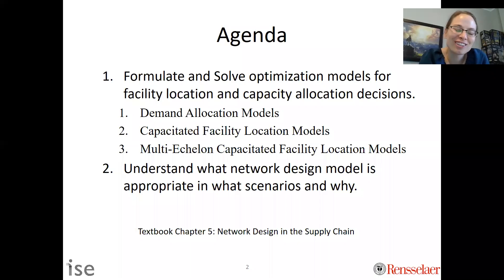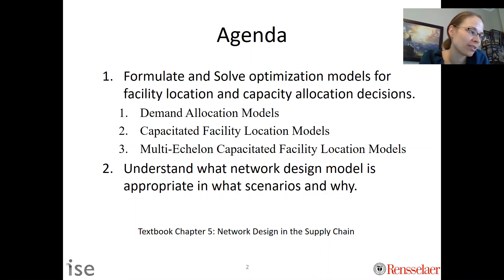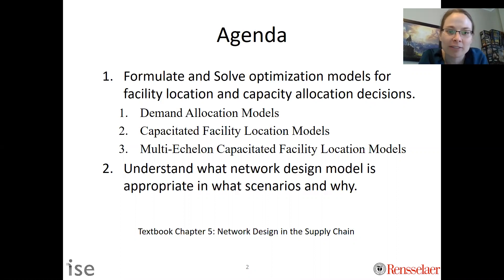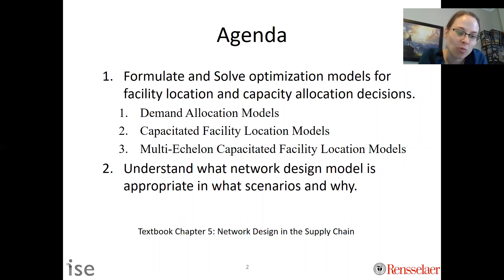This lecture is an introduction to F2 about network design decisions. Through a series of videos, we will talk about formulating and solving optimization models for facility location and capacity allocation decisions. We'll talk about the demand allocation model, capacitated facility location model, and multi-echelon capacitated facility location model. We'll also develop a better understanding of which models are appropriate in which situations. This is chapter five in our textbook.